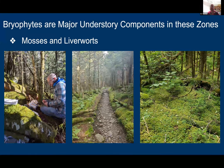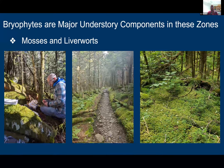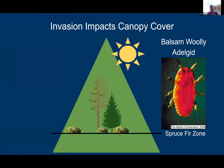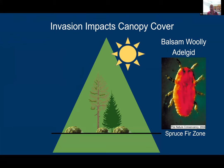However, there are different disturbances that could potentially negatively impact the ability of these species to perform such ecosystem services. One such disturbance is invasion — the balsam woolly adelgid was first found in the 1950s and spread through the ecosystem, and by the 1990s had killed off about 90% of the fir trees.